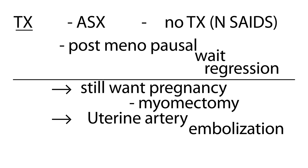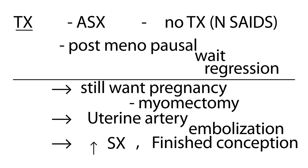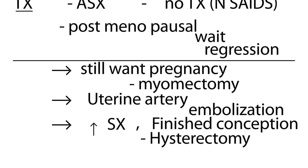Finally, in situations with significant symptomatology — heavy menstrual bleeding, menometrorrhagia — in a woman who is done having children, a hysterectomy is performed. There are different types of hysterectomy: vaginal, intra-abdominal, and laparoscopic.